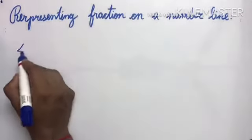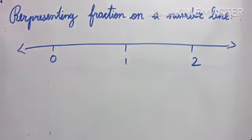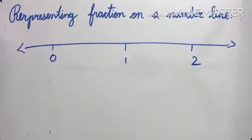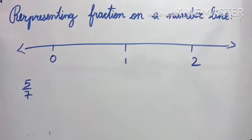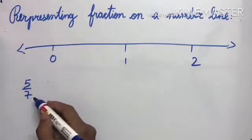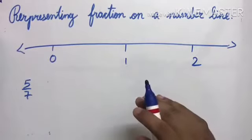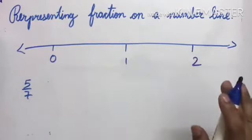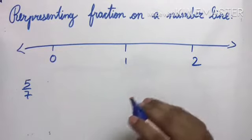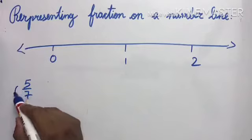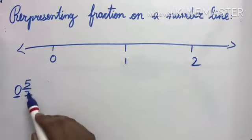Now representing fractions on a number line. A number line has numbers marked on it — 0, 1, 2, and so on. Suppose I need to represent 5/7. This is a proper fraction because the numerator is smaller than the denominator. For a proper fraction, the whole number part is 0, so it lies between 0 and 1.